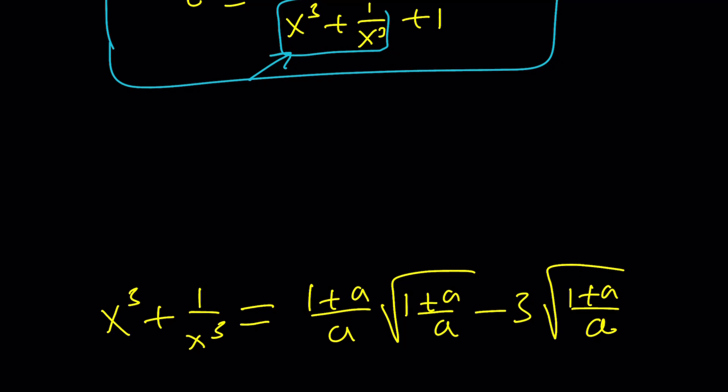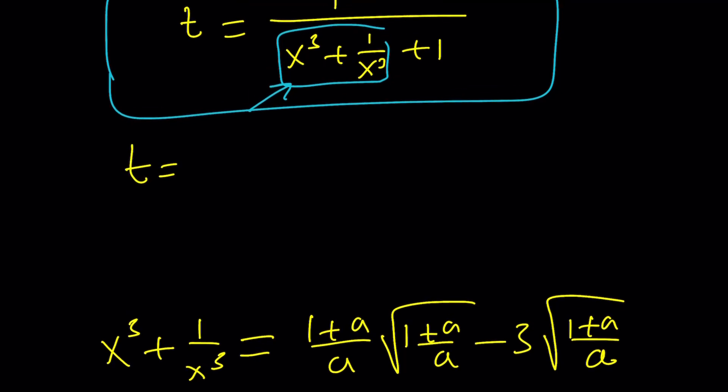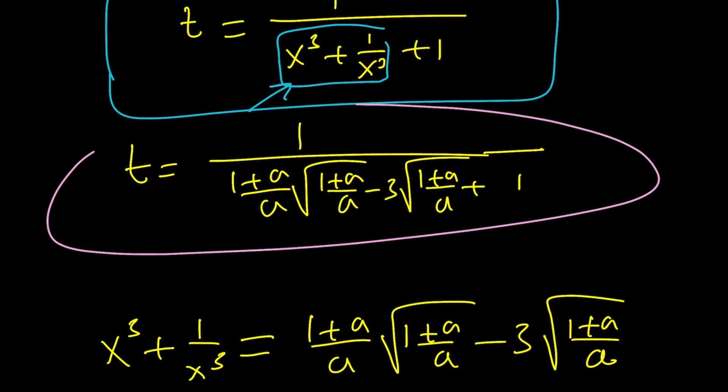We have this expression. We can go ahead and plug it in. And from here, t is going to be, which is what I'm looking for, 1 over 1 plus a over a times the square root of 1 plus a over a minus 3 times the square root of 1 plus a over a plus 1. And then that will be my answer. And how nice, right? In terms of a.